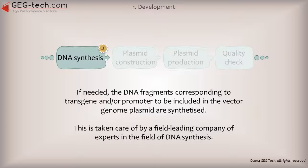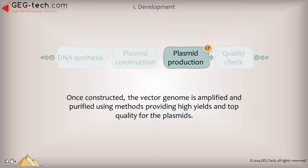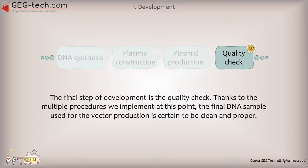Then we construct the vector genome using quality reagents. The constructed vector genome contains all the sequences that will make our vector efficient. Once constructed, the vector genome is amplified and purified using methods providing high yields and top quality for the plasmids. The final step of development is the quality check. Thanks to the multiple procedures we implement at this point, the final DNA sample used for the vector production is assured to be clean and proper.